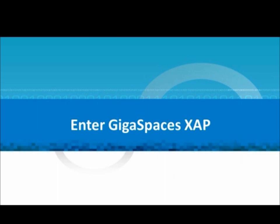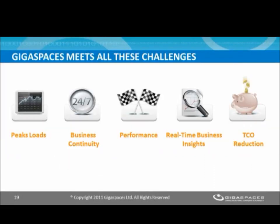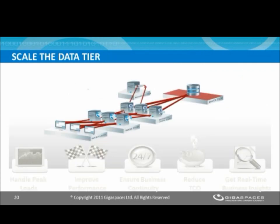I'd like to introduce our product called XAP, or Extreme Application Platform. Just to be clear, we offer a software solution — it's a software container, not a hardware solution or a device that sits on your network. I'm going to walk through a typical tier-based architecture, because most people are very familiar with those — they've been around for the last 15 to 20 years — and there are some challenges inherent in them. What I'd like to do is walk through how we would transform a typical tier-based architecture into what we call a space-based architecture that will allow us to meet all of these enterprise challenges.